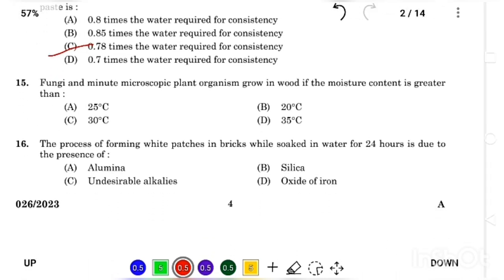Fungi and minute microscopic plant organisms grow in wood if the moisture content is greater than Answer Option B, 20 degrees Celsius. The process of forming white patches in bricks while soaked in water for 24 hours is due to the presence of Answer Option C, undesirable alkalies.